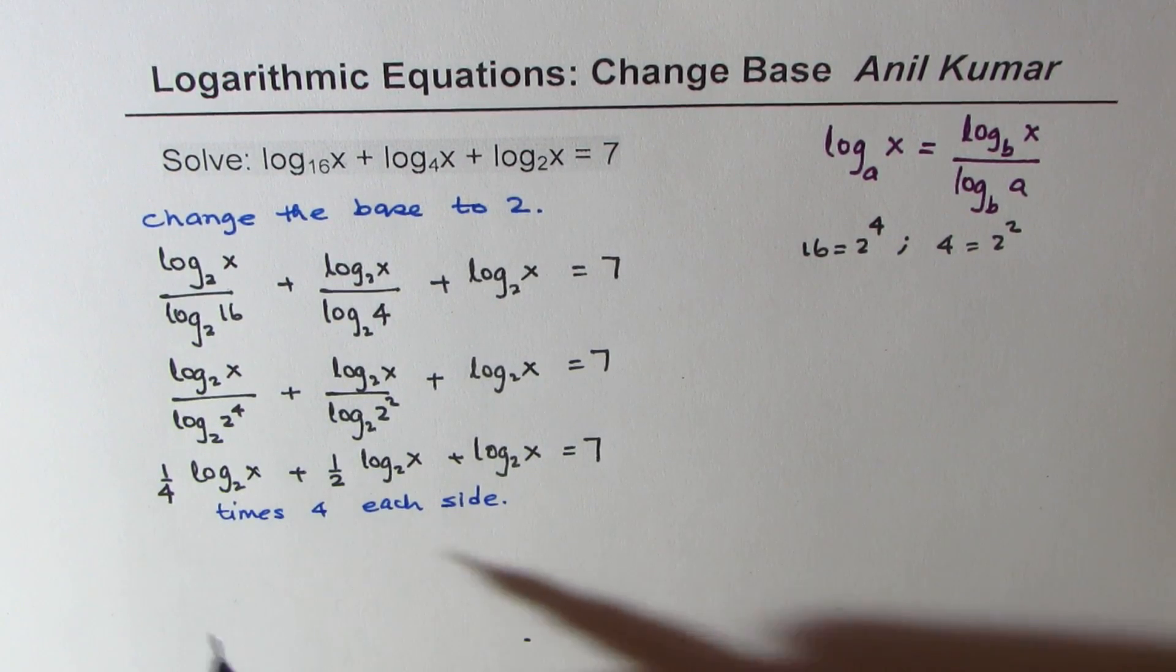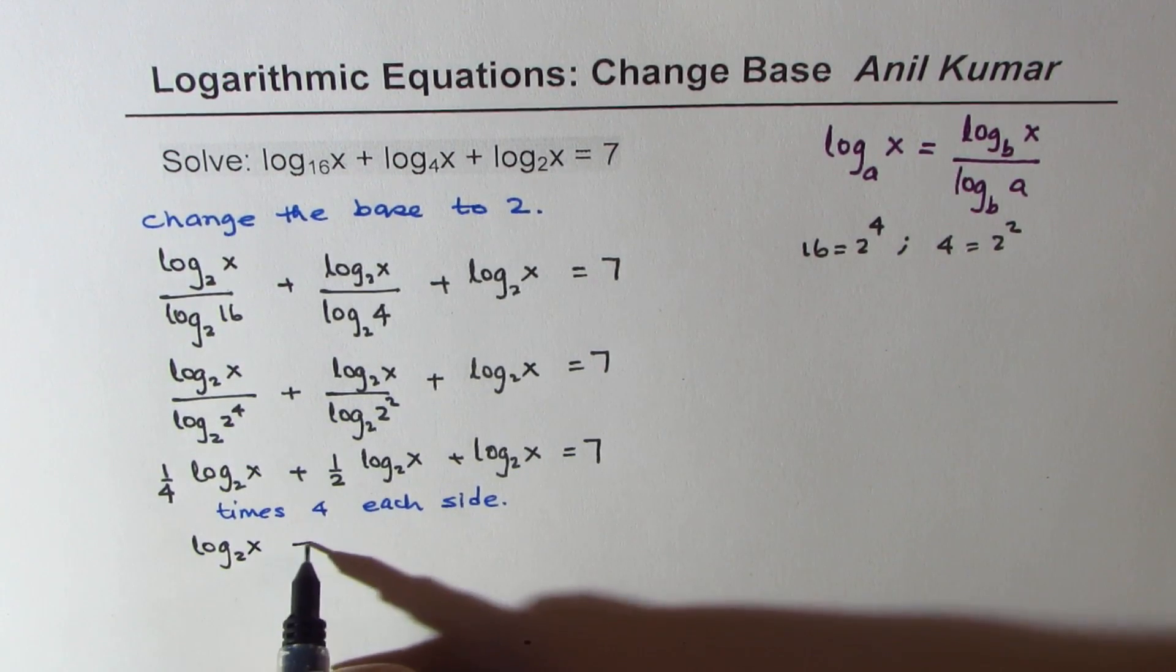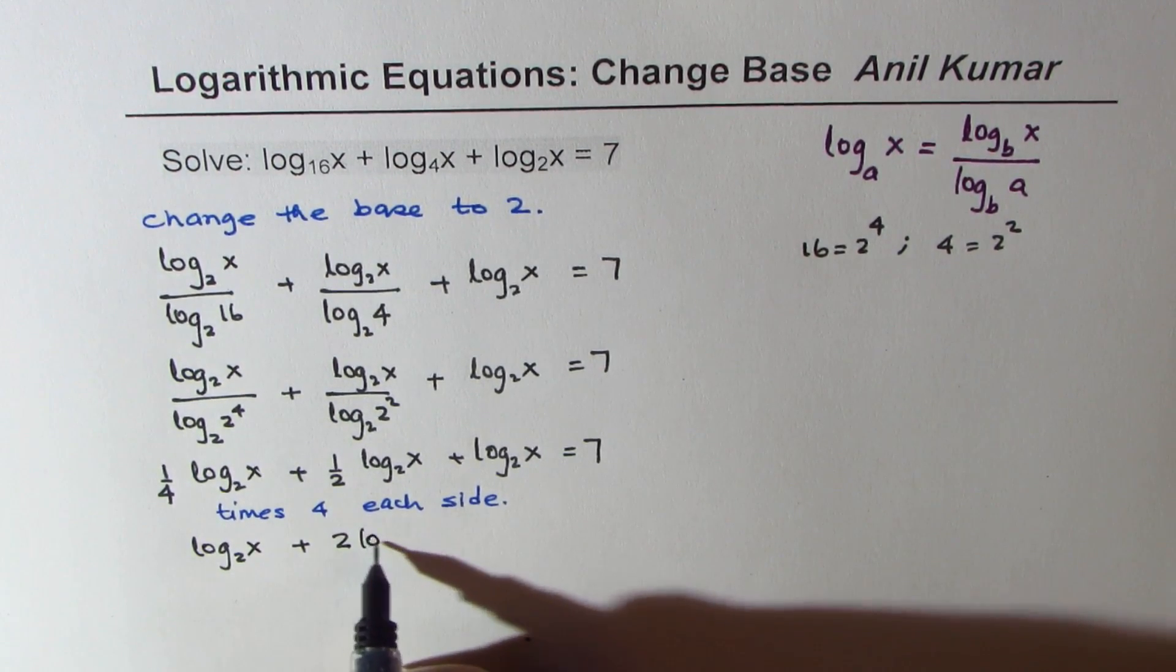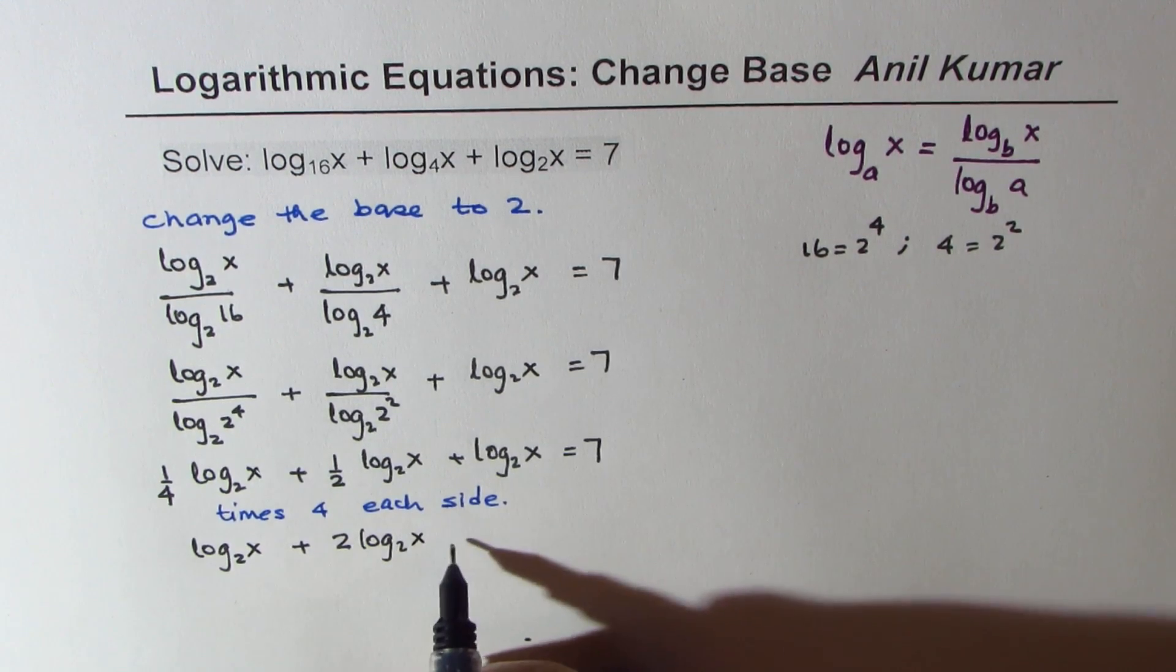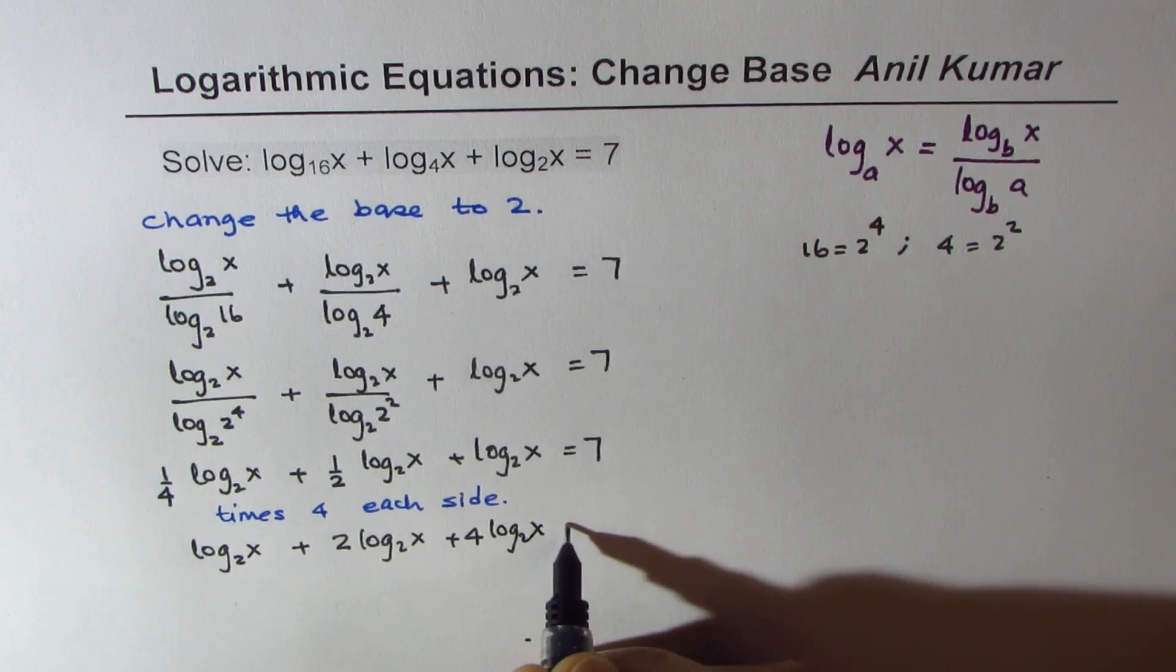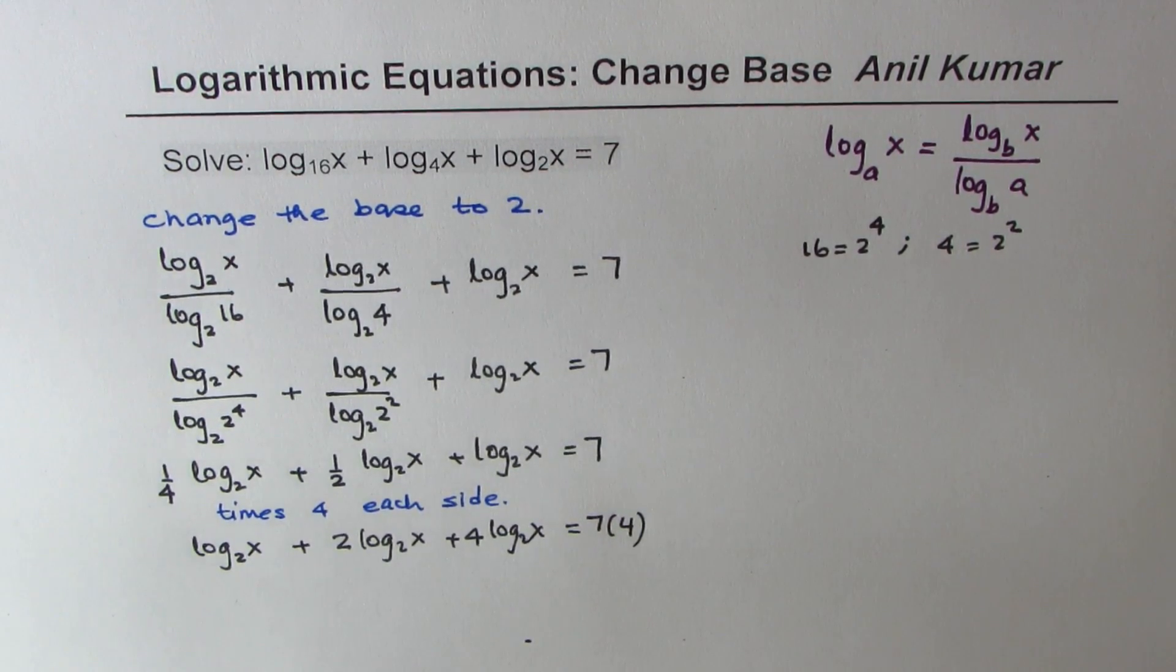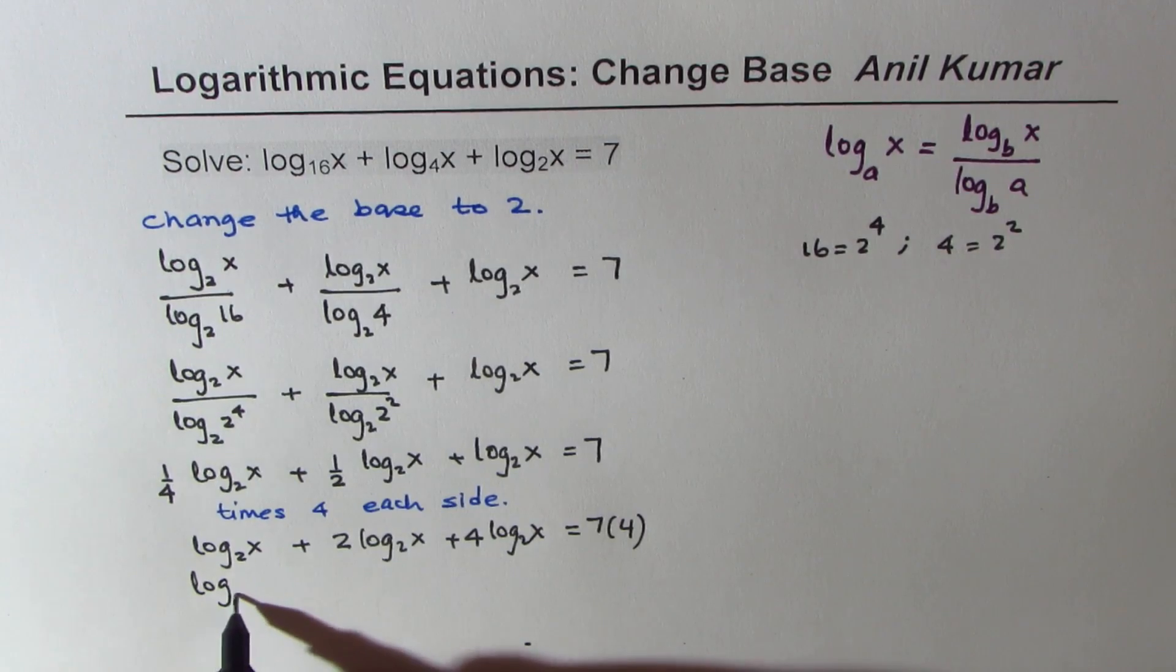So if you do that you get log base 2 of x plus 2 times log base 2 of x plus 4 times log base 2 of x equals 7 times 4 which is 28. Now you can combine all these terms.